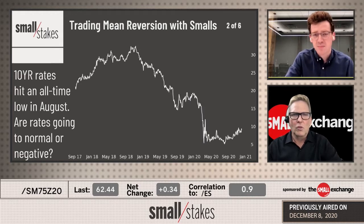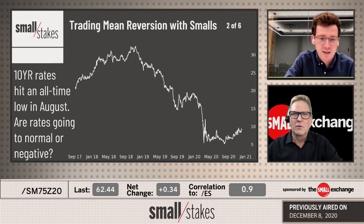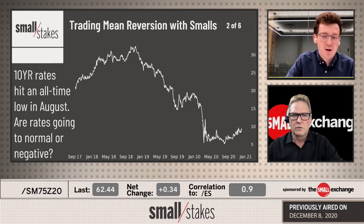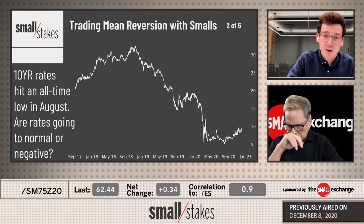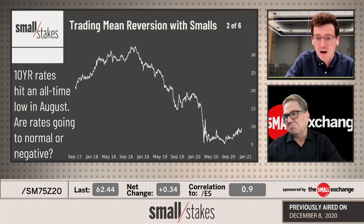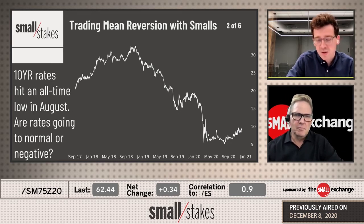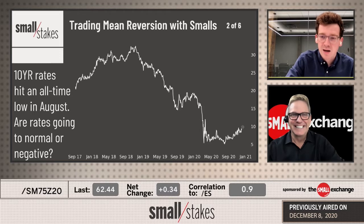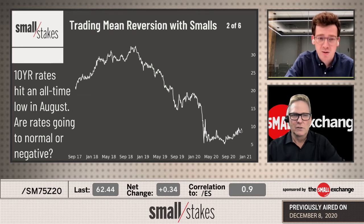Moving past that, I want to talk about trading mean reversion with S10Y as the example. The first idea with interest rates, especially here in 2020 as we border on 2021, is: are rates going normal, are they going negative, going down to zero? This product is built for negative values. If you think rates are going to normal, you buy; if you think they're going negative, you sell. There's no inverse or anything like that.